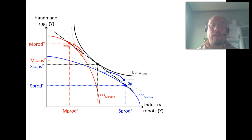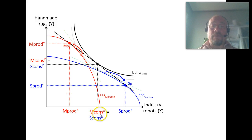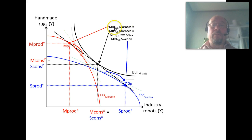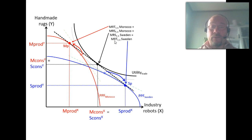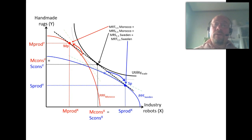Since we assumed identical preferences, both countries consume equally much of each good — the same amount of handmade rugs in Morocco and Sweden, and the same amount of industry robots in Morocco and Sweden. We end up in a situation where the marginal rate of transformation in Morocco equals the marginal rate of substitution in Morocco, giving a social optimum. Similarly, the MRS in Sweden equals the MRT in Sweden, also an optimum. So we have equality throughout: MRT equals MRS in each country.